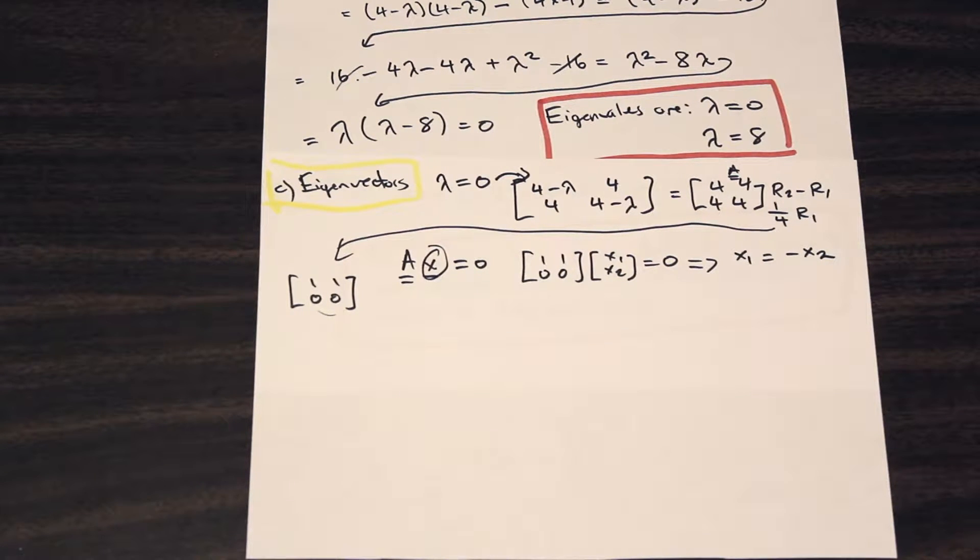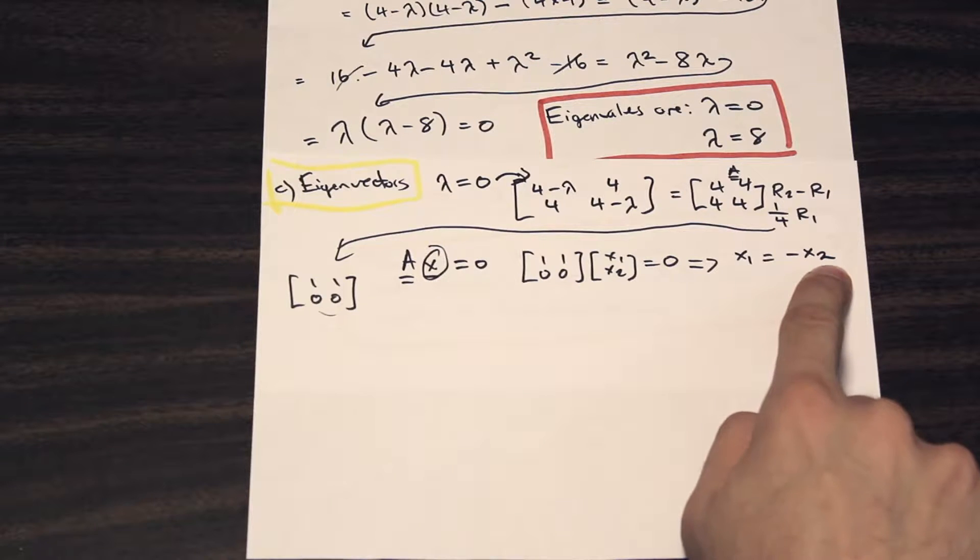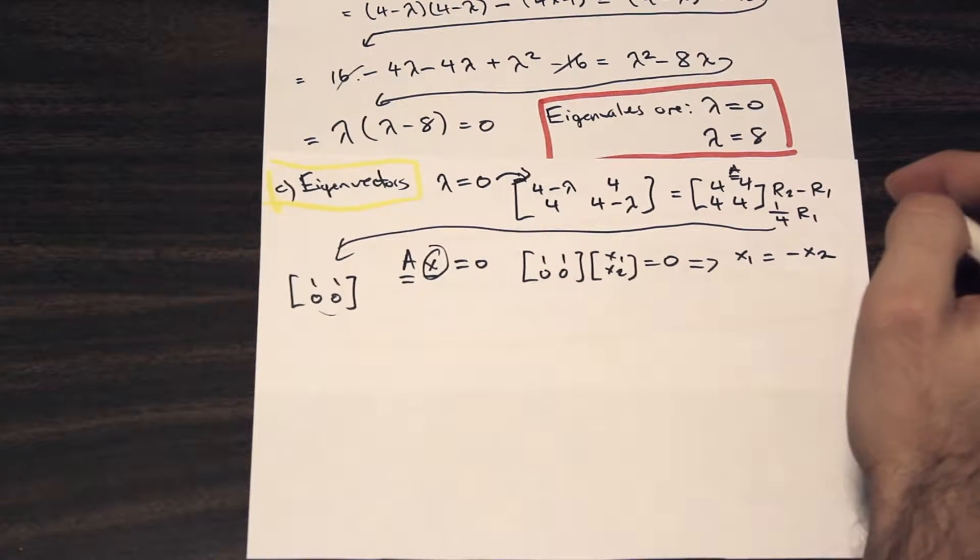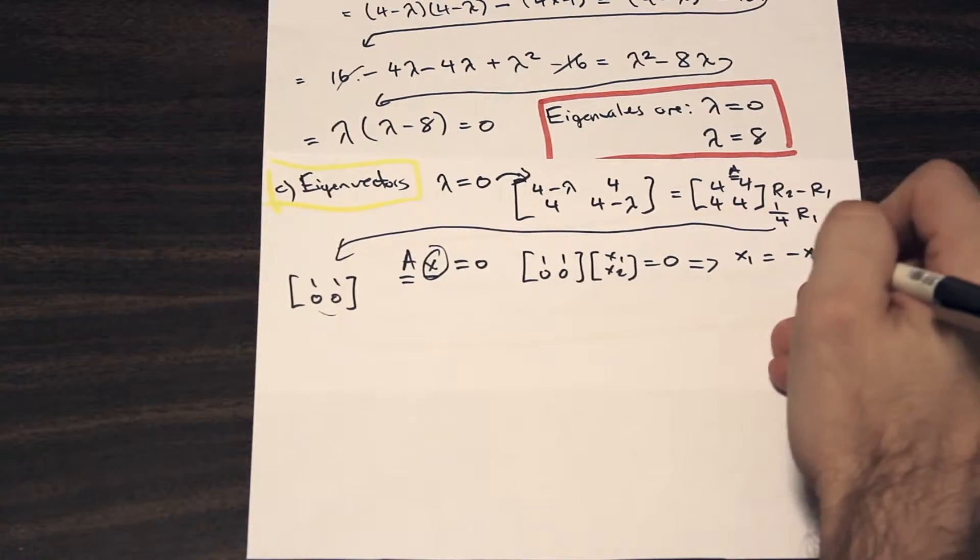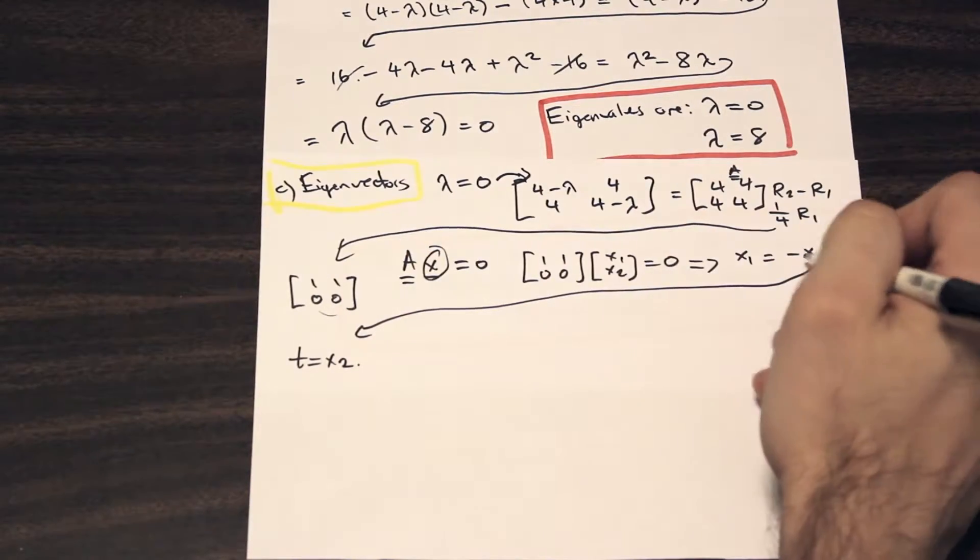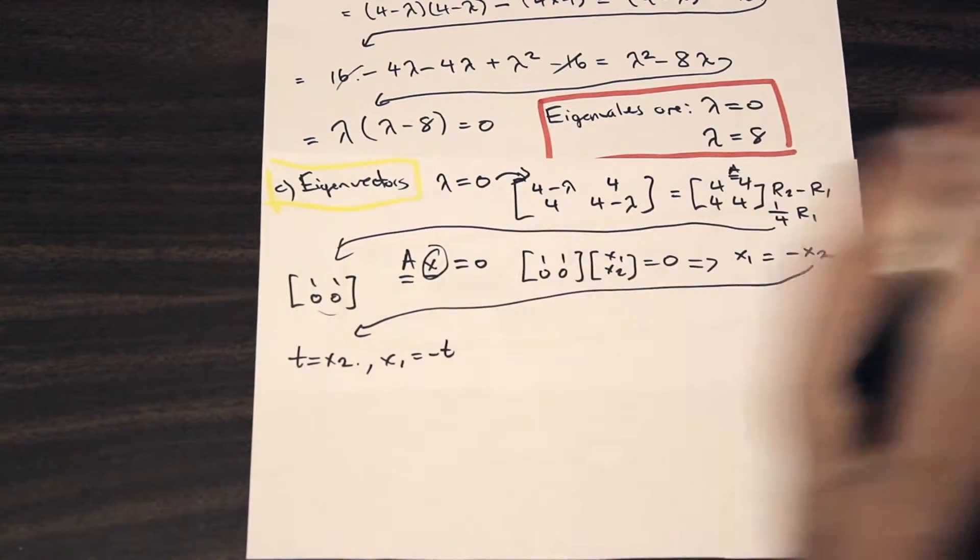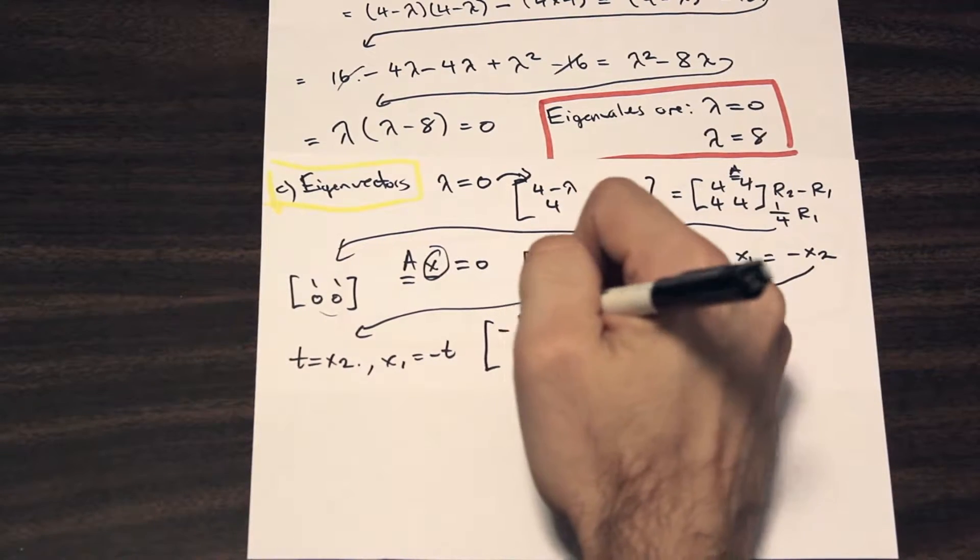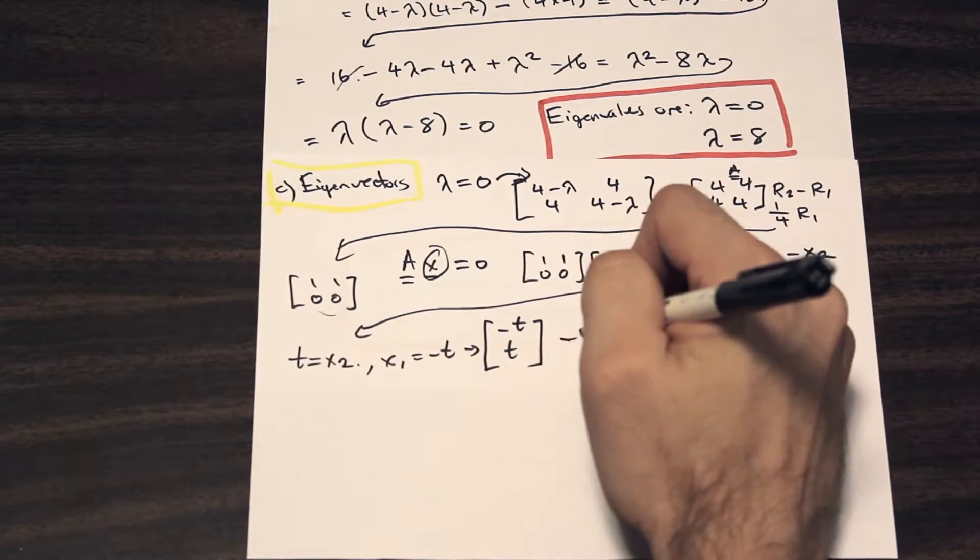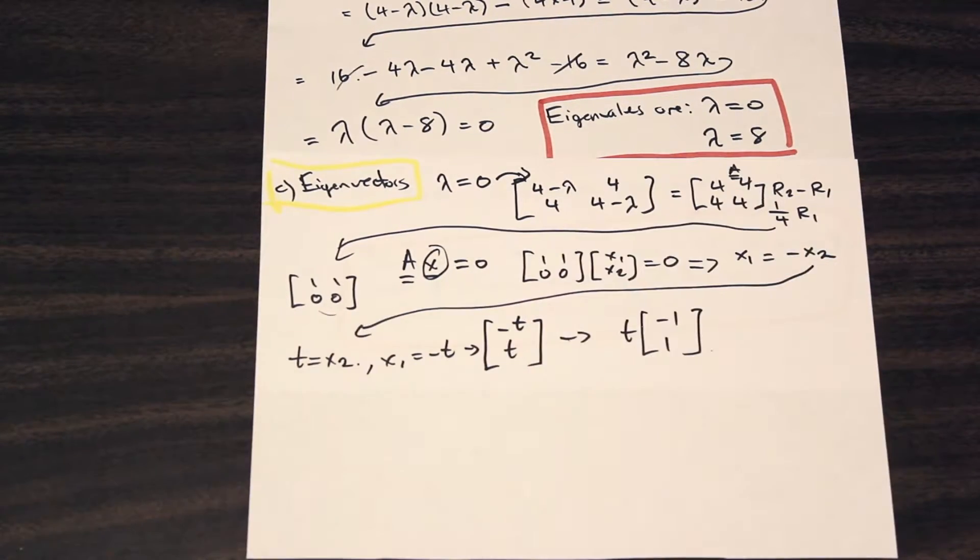So X1 and X2 could be anything. X1 could be negative 2 and X2 could be 2 or X1 could be negative 3 and X2 could be 3. It could be infinitely many numbers as long as they have opposite signs. So how we solve that is we're just going to say that T is equal to X2. So we have our dummy variable T, T is equal to X2. And if we go ahead and plug T into this formula here, we're going to see that X1 is equal to negative T. So let's make our vector now in terms of T for our solution. So we have negative T and T. And if we factor our T out, we have T times negative 1, 1. So this here is our eigenvector.